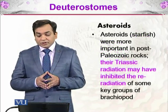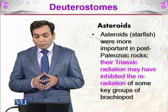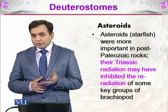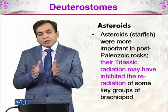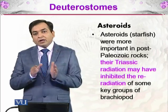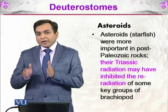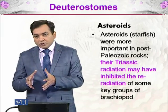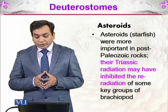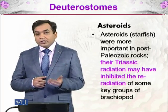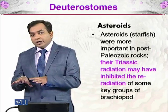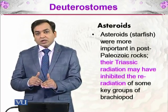The asteroids are the starfish — the most famous echinoderms — and they were more important in post-Palaeozoic rocks. Their Triassic radiation may have inhibited the re-radiation of some key groups of brachiopods. When asteroids occupied the benthic niche, the brachiopods sharing that same niche could not adapt as well, leading to reduced brachiopod populations and possibly extinction in some cases.